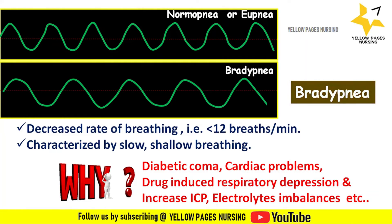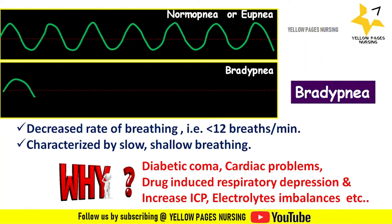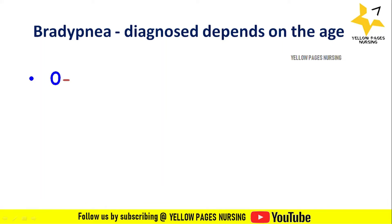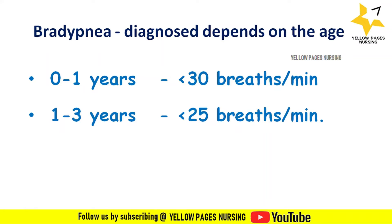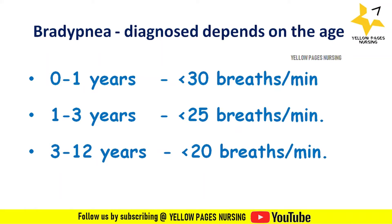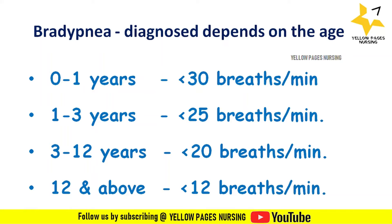Bradypnea diagnosis depends on age: in 0 to 1 year it is less than 30 breaths per minute; in 1 to 3 years, less than 25 breaths per minute; in 3 to 12 years, less than 20 breaths per minute; and in 12 years and above, less than 12 breaths per minute.